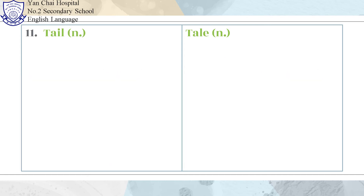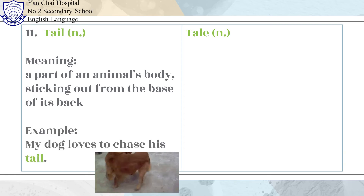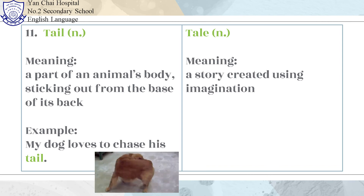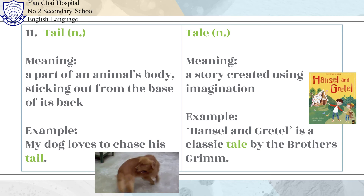Number 11: Tail and Tale. Tail means a part of an animal's body sticking out from the base of its back. Example: My dog loves to chase his tail. Tale means a story created using imagination. Example: Hansel and Gretel is a classic tale by the Brothers Grimm.